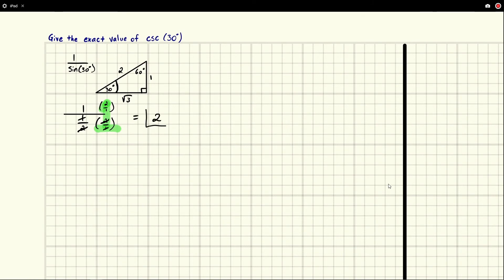So the answer for cosecant of 30 degrees is 2. We could check this answer using a calculator.